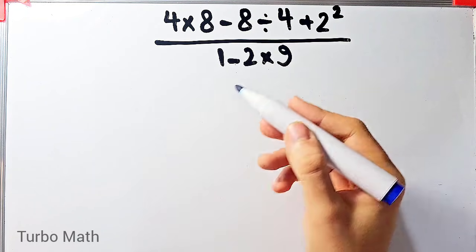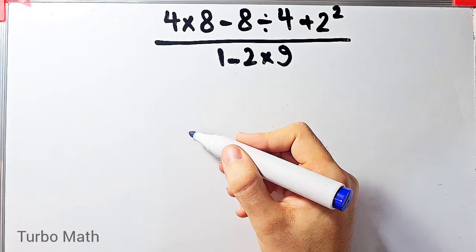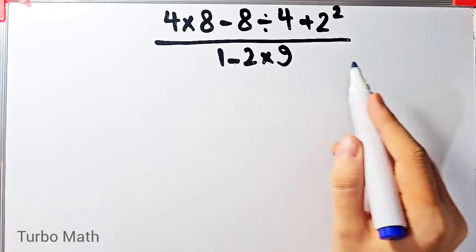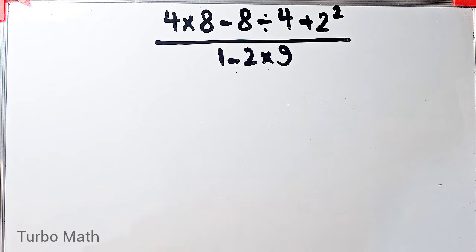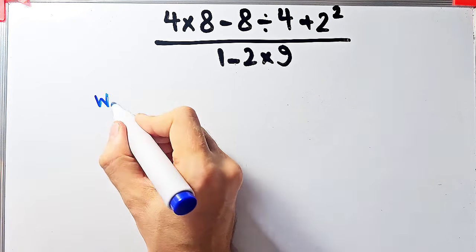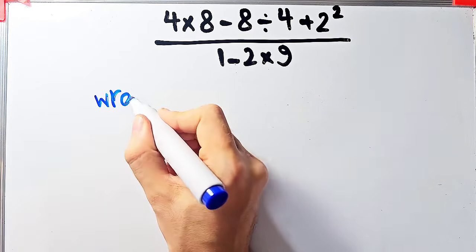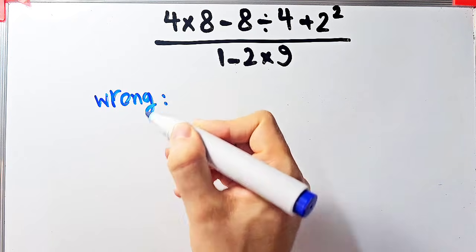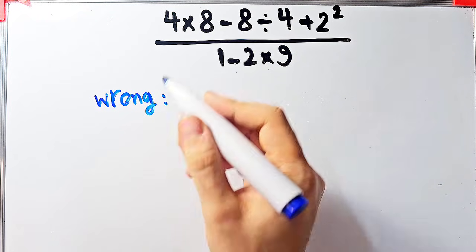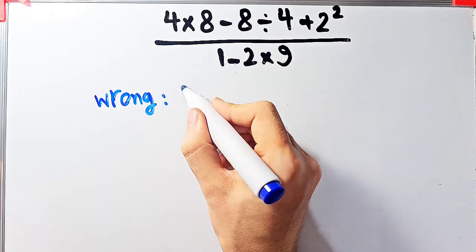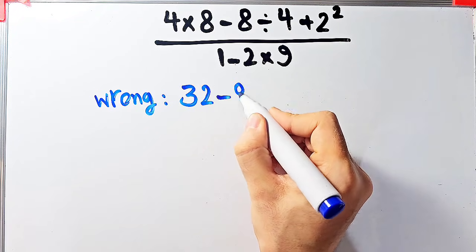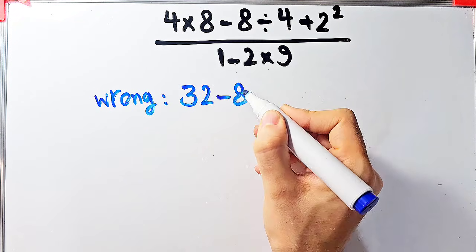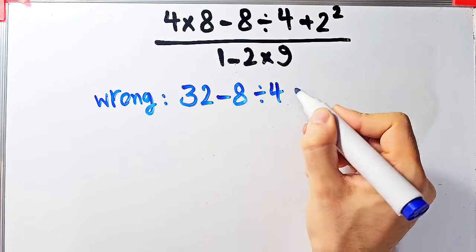Hi friends, welcome to Turbo Math channel. Many people when they see this question don't know which operation to do first, so they often make a mistake. For example, some people solve this question like this: they say 4 times 8 equals 32, then 32 minus 8 divided by 4, plus 2 to the power of 2, which equals 4.